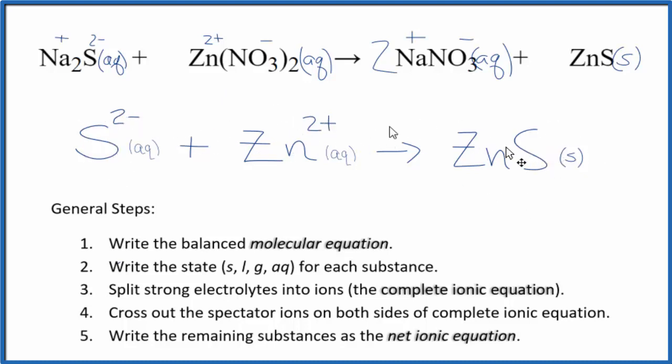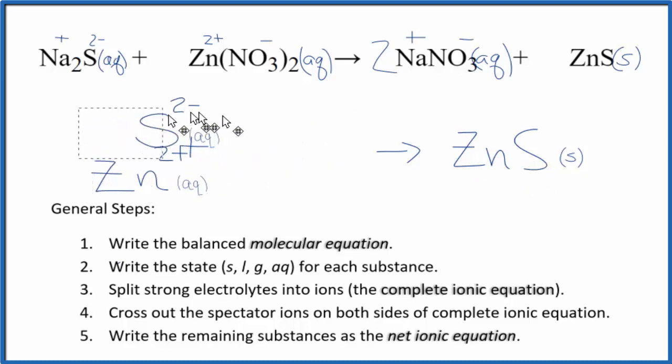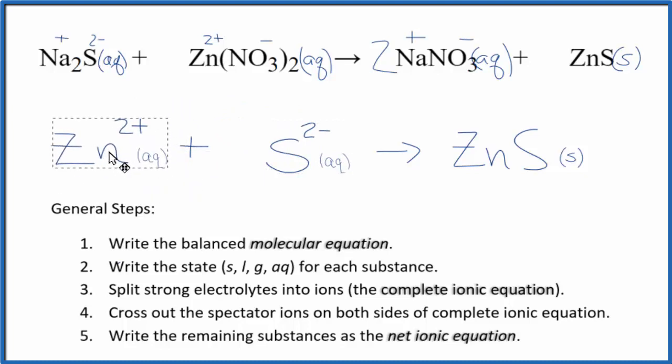And we have a sulfur here, here, zinc, and zinc. So mass is balanced as well. Some people like to have the positive ion first. Either way, it's the same thing, but it does look a little bit nicer. So we'll do that.